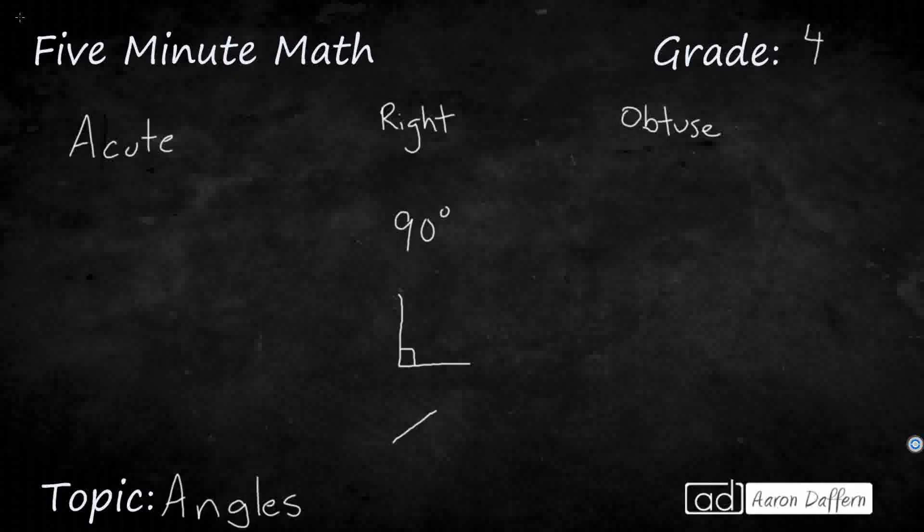Now it can be rotated a little bit. Sometimes you're going to see a right angle that looks like this, and you're like, I think that might be 90 degrees. Always look for that little square.